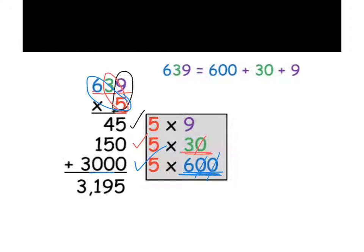What we do is once we have all these partial products, we add them together, make sure they're lined up, and we get 3,195. So I'm going to give you guys another problem that I'd like for you to try out using the partial product strategy.